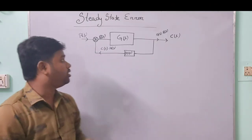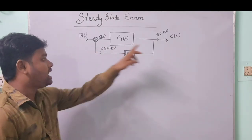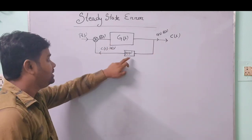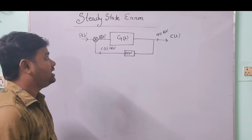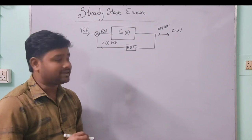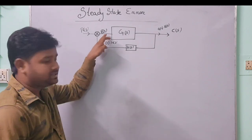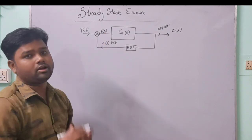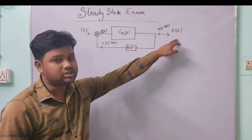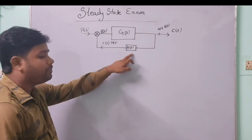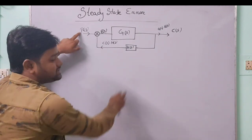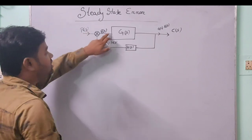This is a transfer function model where the input is R(S), output is C(S), gain is G(S), and feedback is H(S). In this error analysis, one important part is E(S) — the error which has occurred. The output C(S) is fed back to the input by the feedback signal H(S). The difference between R(S) and the feedback H(S) is E(S).